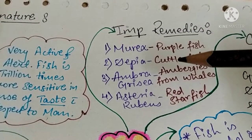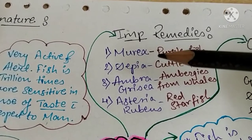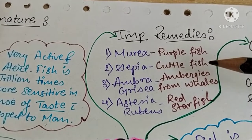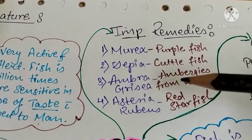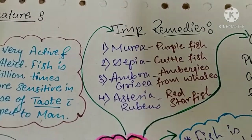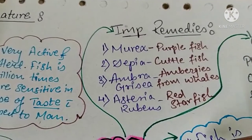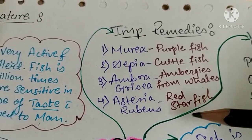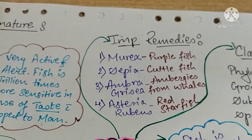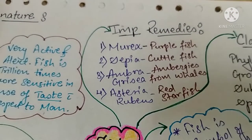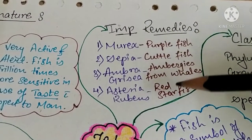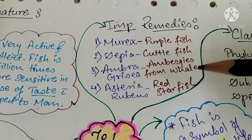Some important remedies prepared from the fish group are: Murex, sourced from purple fish; Sepia, prepared from cuttlefish; Ambra Grisea, prepared from ambergris from whale; and Asteria Rubens, prepared from red starfish. These four are important as per the syllabus of UGBHMS.